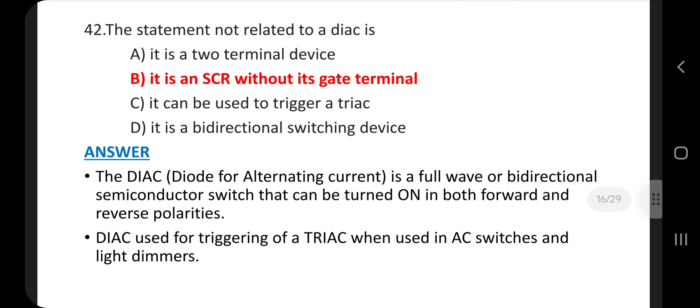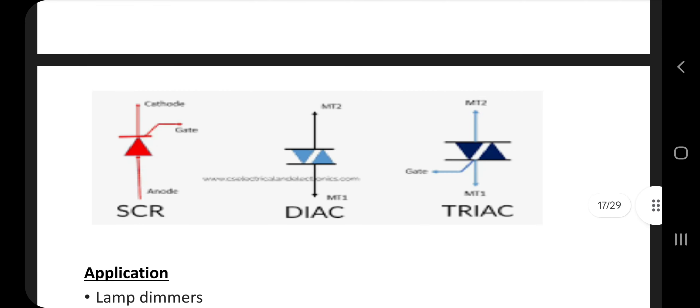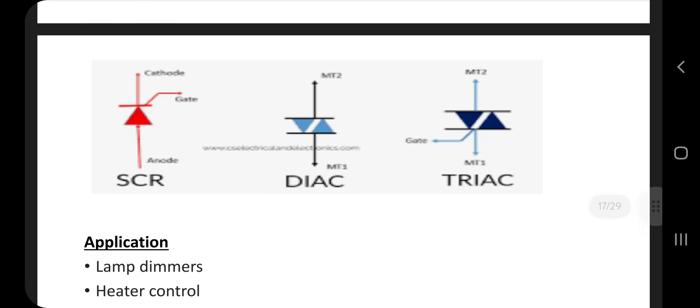Question number 42. The statement not related to a DIAC is, answer is option B, it is an SCR without its gate terminal. The DIAC, diode for alternating current, is a full wave or bi-directional semiconductor switch that can be turned on in both forward and reverse polarities. DIAC is used for triggering of a TRIAC when used in AC switches and light dimmers.